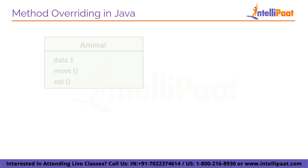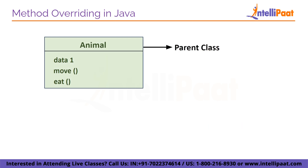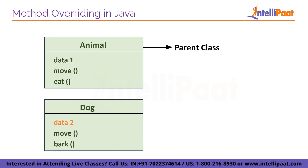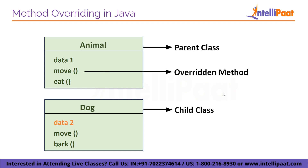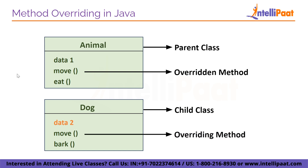Let's understand this with an example. Suppose you declared a class named Animal — consider it as a parent class. After that we declared another class named Dog as a child class. We have a method named 'move' in the Animal class, and we are using the same method 'move' in the child class also. The method in the parent class is the overridden method, and the one in the child class is the overriding method.